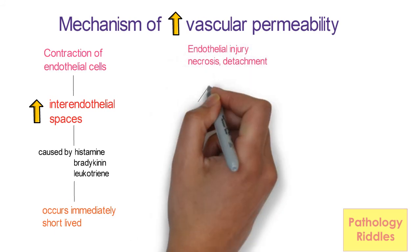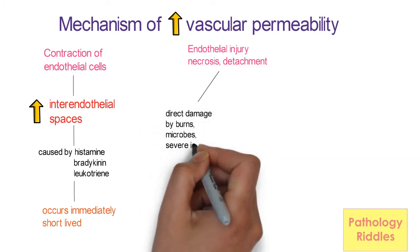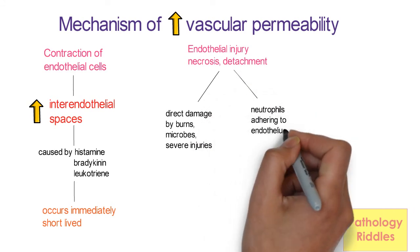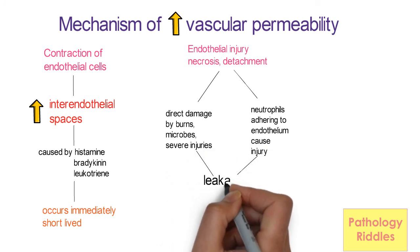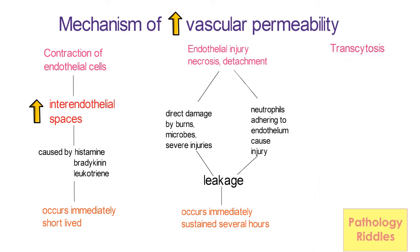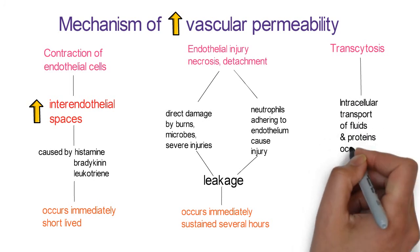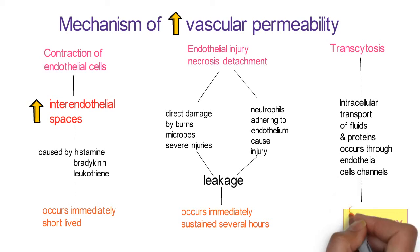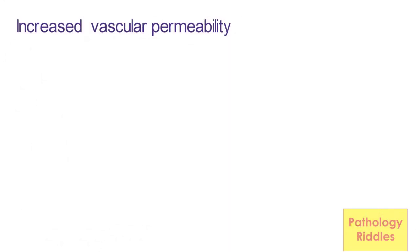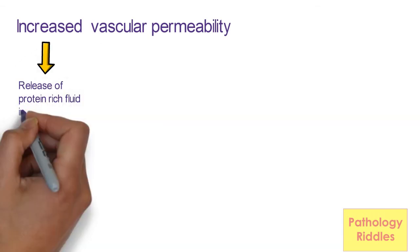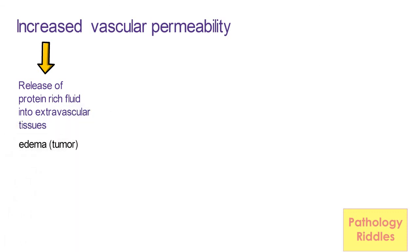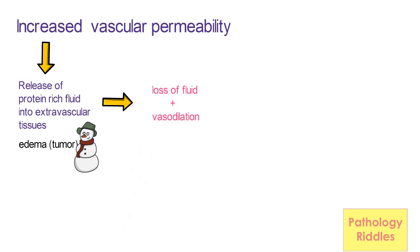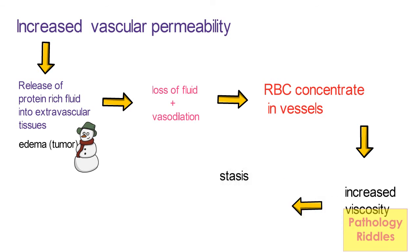The second mechanism is injury to the endothelial cells — they become necrosed and detached. The injury can happen directly by burns, microbes, or by neutrophils, i.e. leukocytes adhering to the endothelium, leading to leakage of internal contents from the arterioles. The third mechanism is transcytosis, meaning intracellular transport of fluid and plasma proteins through intracellular channels within the endothelial cells, caused by vascular endothelial growth factor (VEGF). These three mechanisms cause increased release of protein-rich fluid into the extracellular space, resulting in edema — i.e. tumor or swelling. The loss of fluid from microvessels and vasodilation concentrates the RBCs in the center, leading to increased viscosity and slow blood flow, a state called stasis.